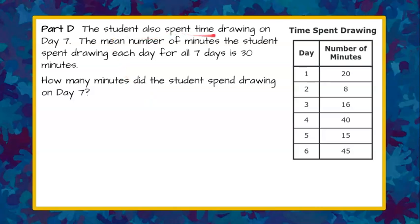Part D. The student also spent time drawing on day 7. The mean number of minutes the student spent drawing each day for all 7 days is 30 minutes. How many minutes did the student spend drawing on day 7? Please pause now and come back when you're done. Welcome back. So we are looking to find the mean out of 7 days and we know that they spent 30 minutes average or the mean over 7 days was 30. So that's not the number of minutes they spent on day 7. It's the average or mean of all 7 days. So we know that we need to add a seventh day to our table. The problem is we don't know the number of minutes on that seventh day. That's our X, our unknown.